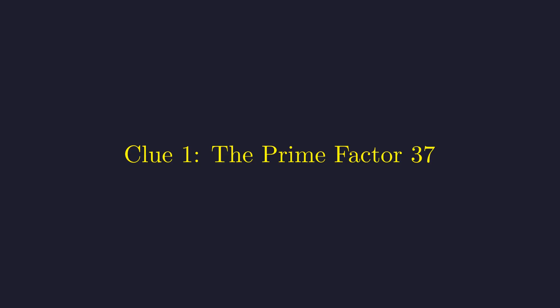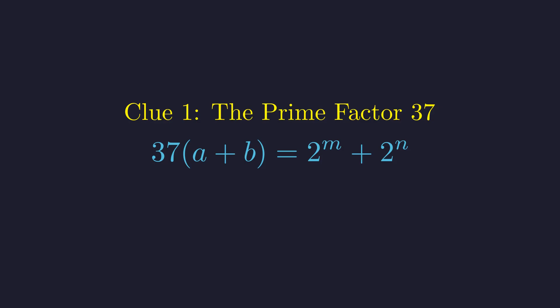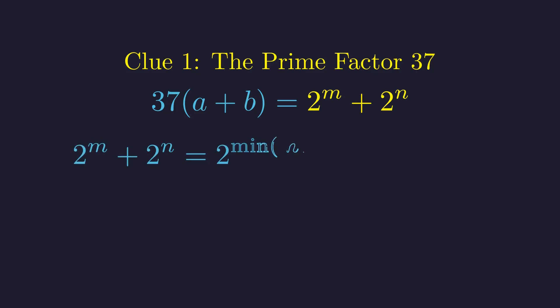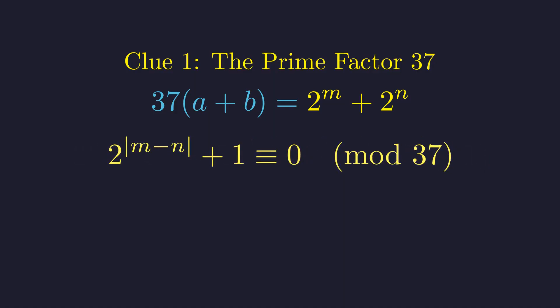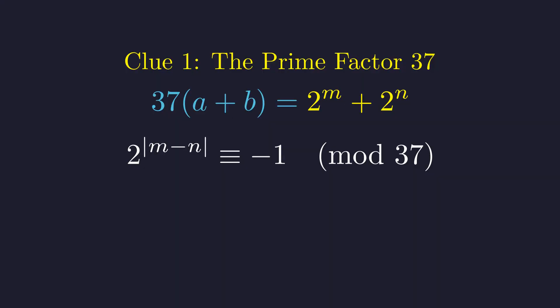Let's investigate the consequences of the first relationship involving the prime number 37. The left side is clearly divisible by 37, so the right side, 2^m + 2^n, must also be divisible by 37. We factor this expression: since 37 is odd, it cannot divide the power-of-2 factor, so 37 must divide the other factor, 2^|m−n| + 1. This gives us our first critical condition: 2^|m−n| ≡ −1 (mod 37).